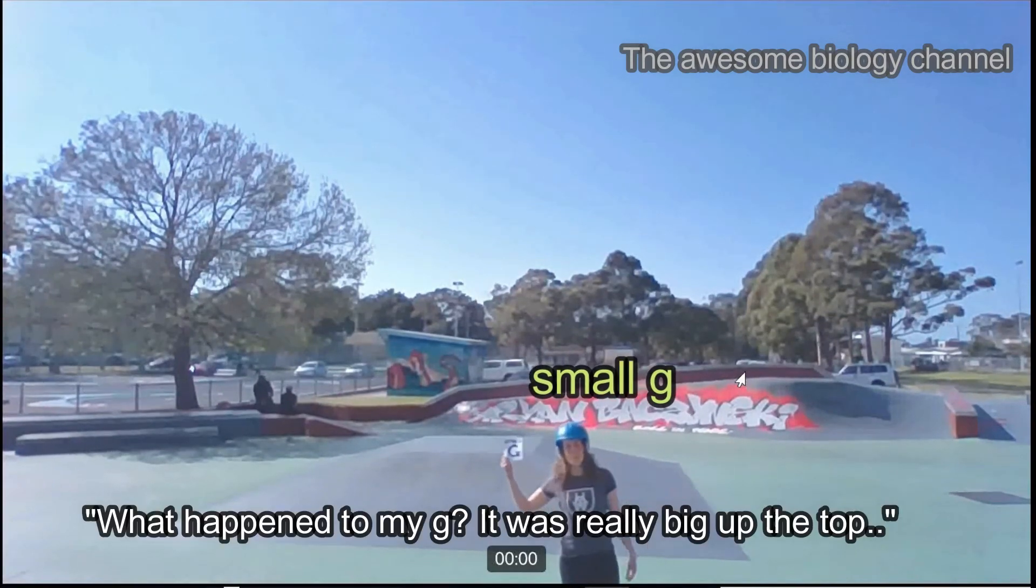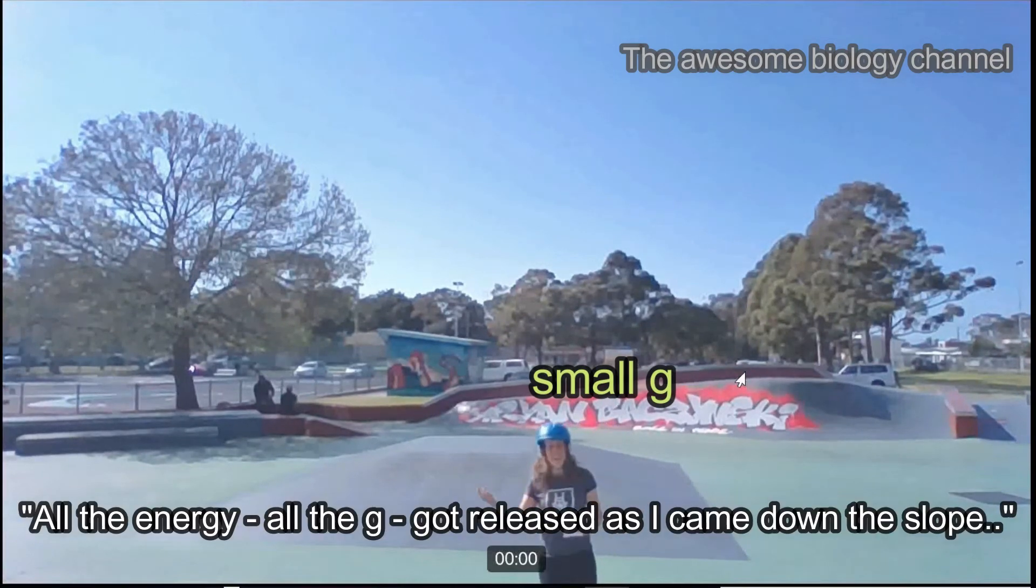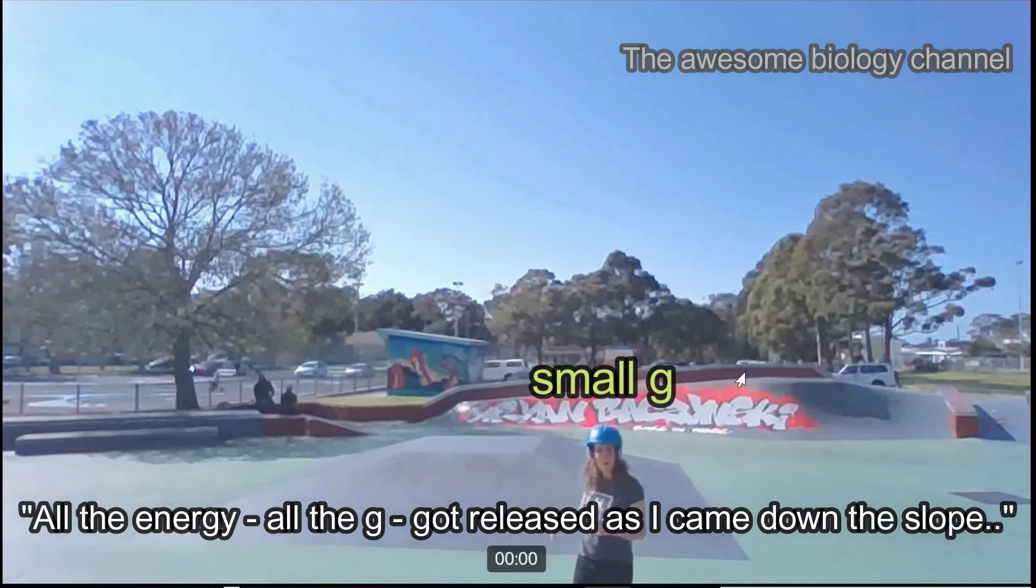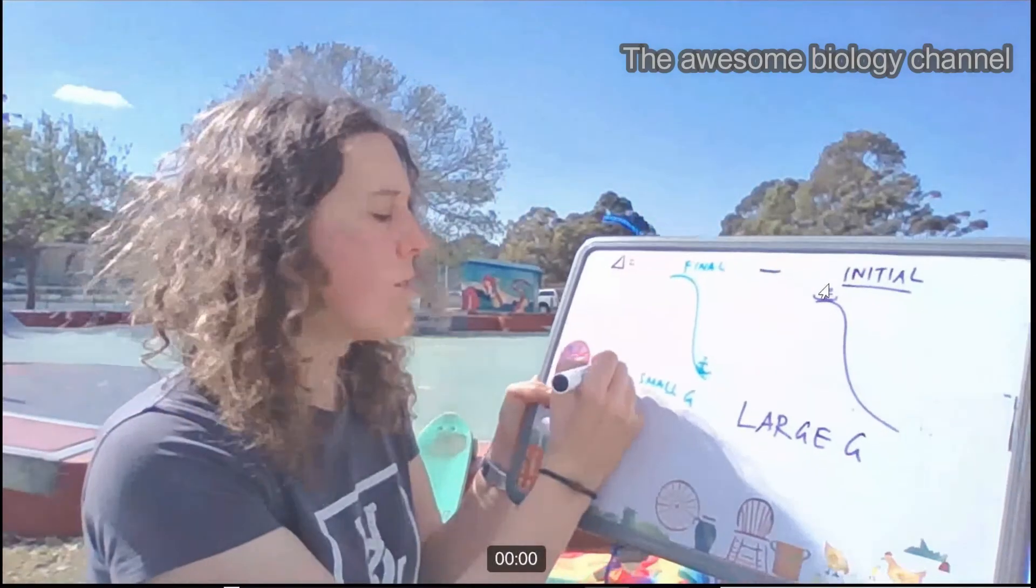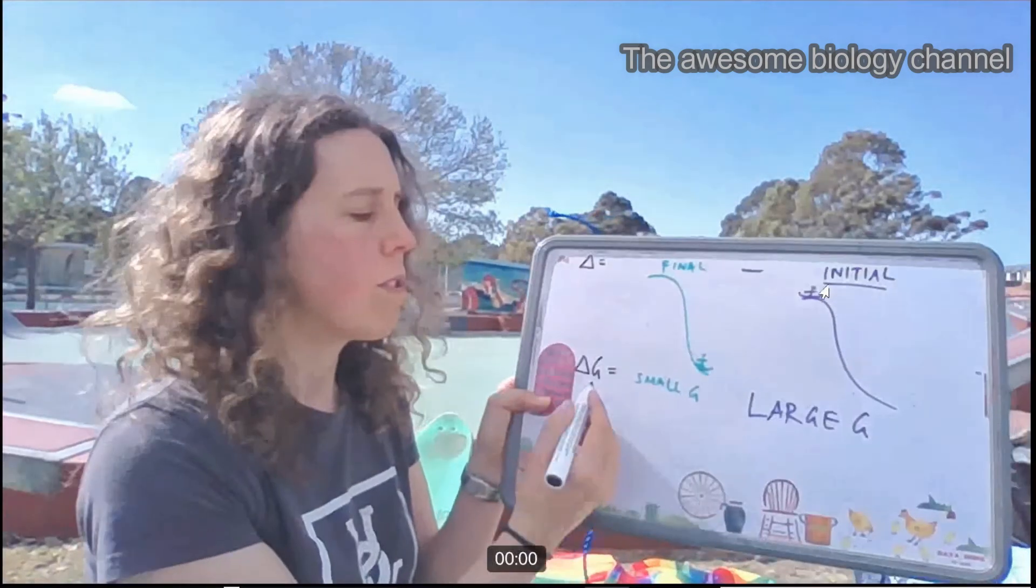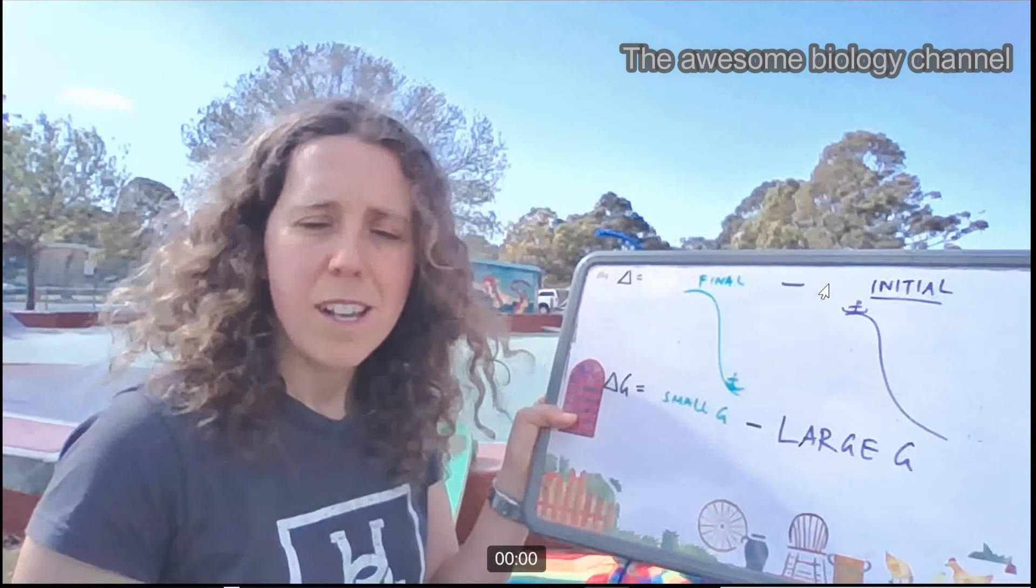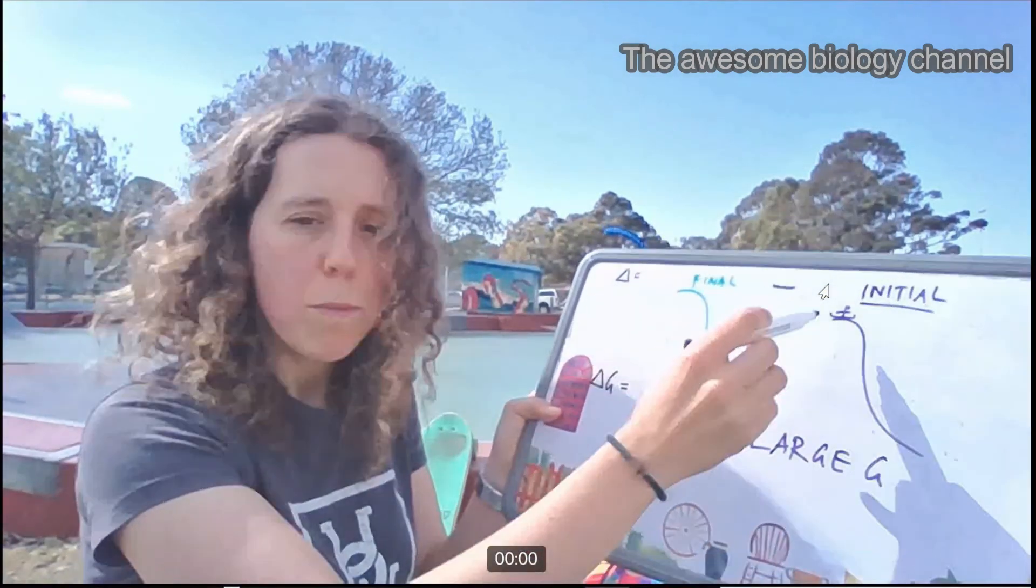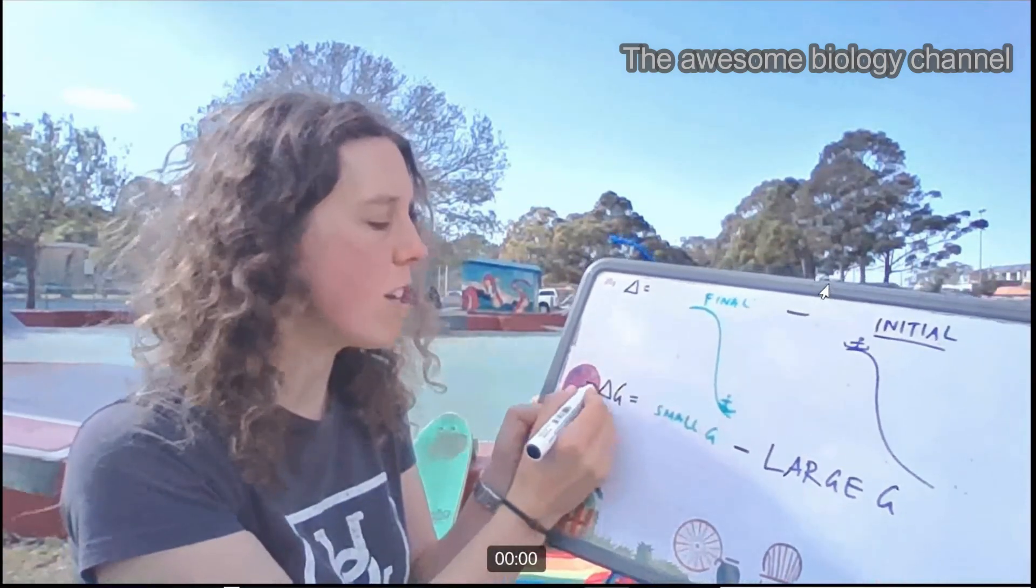What happened to my G? It was really big up the top. Oh yeah, all the energy, or the G, got released as I came down the slope. How about I got a little G? Delta G equals final minus initial. And in this case, if we start off with something large and we use that energy and we end up with something small, that delta G is going to be negative.